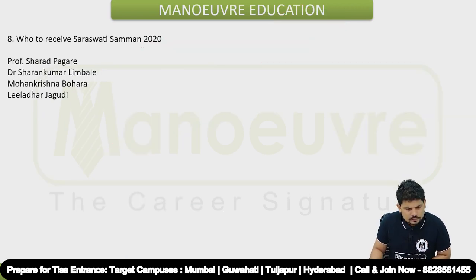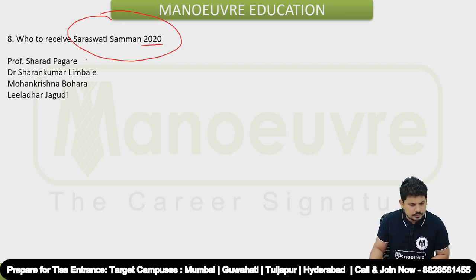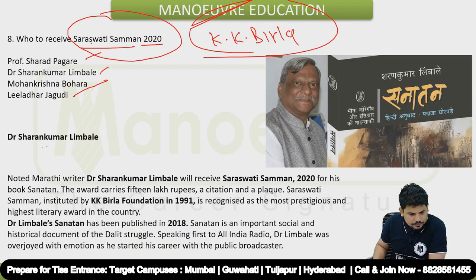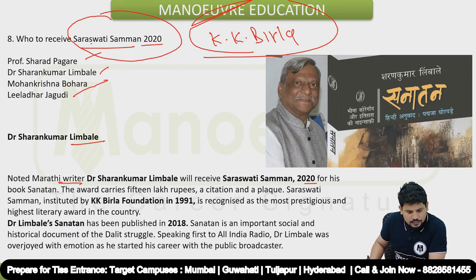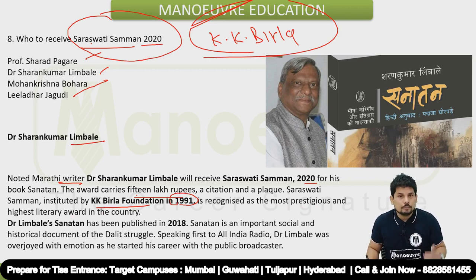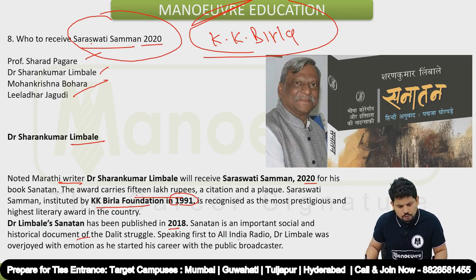Eighth question: who received the Saraswati Samman 2020? The options are Professor Sharad Pagare, Dr. Saran Kumar Limbale, Mohan Krishna Bahora, and Leeladhar Jagudi. The right answer is Dr. Saran Kumar Limbale, a noted Marathi writer, who received the Saraswati Samman 2020 for his book 'Sanatan'. The award carries 15 lakh rupees, a citation, and a plaque. The Saraswati Samman was instituted by the KK Birla Foundation in 1991 and is recognized as the most prestigious literary award in the country. Sanatan, published in 2018, is an important social and historical document of the Dalit struggle.